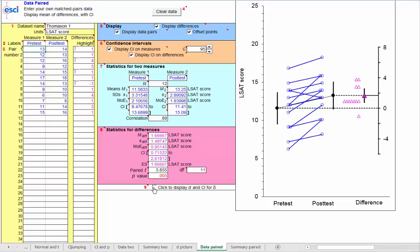Next step is to consider Cohen's D, the standardized version of this effect size. So I click down at red 9, and there's the panel for Cohen's D. As you know, Cohen's D is an effect size divided by a standardizer.